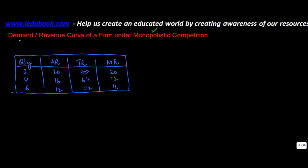Let us understand the demand or revenue curve of a firm under monopolistic conditions. Monopolistic competition is also known as imperfect competition.